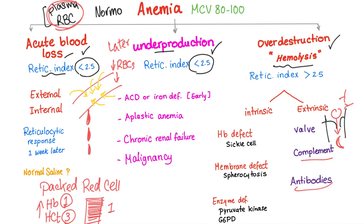All of these are the causes of normocytic anemia, and we will discuss them one by one in detail in upcoming videos. For now, the main idea: other than acute blood loss, normocytic anemia is either due to underproduction or over-destruction. Thank you for watching. I will see you in the next video. Take care, study hard, be well.